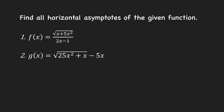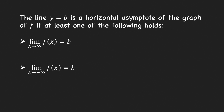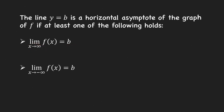In this video, I'm going to show you how to find the horizontal asymptotes of the following functions using limits. Let us first recall the definition of a horizontal asymptote. The horizontal line y equals b is a horizontal asymptote of the graph of f if at least one of the following is satisfied: the limit at positive infinity equals b, or the limit at negative infinity equals b.